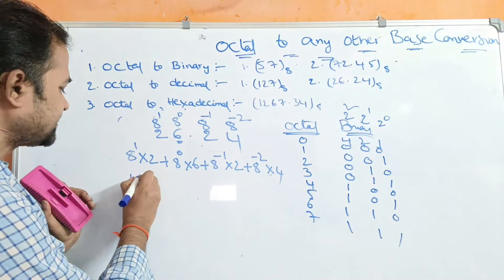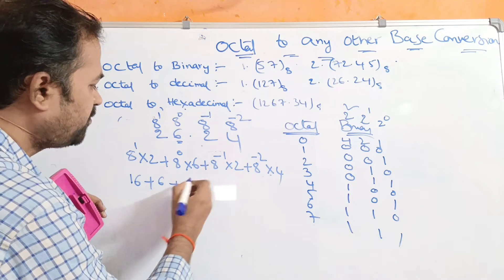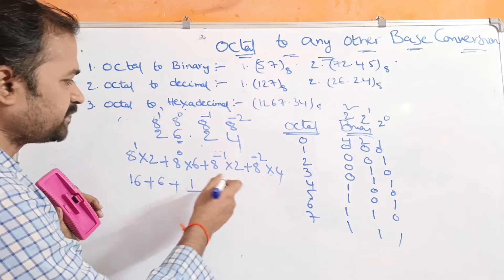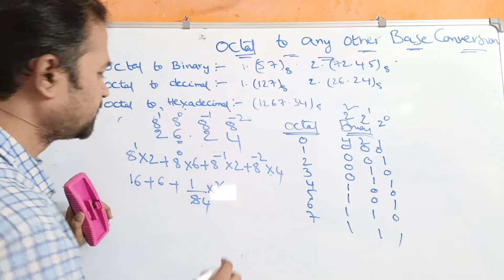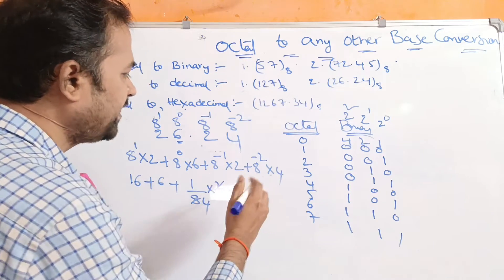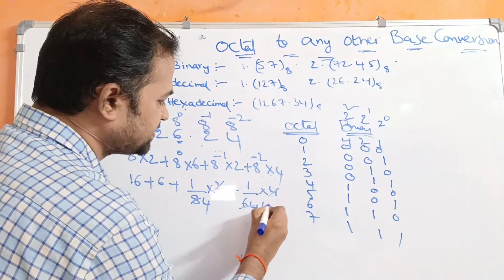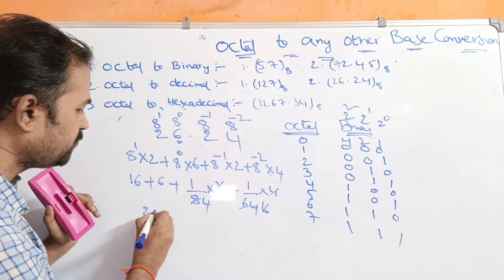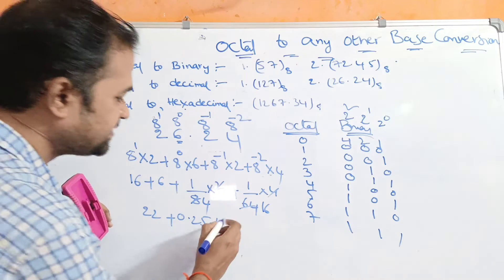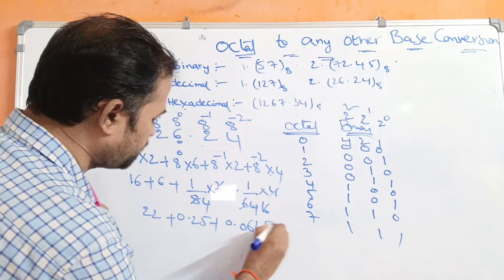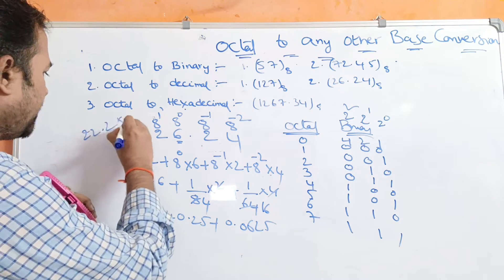Calculating: 8¹ × 2 = 16. 8⁰ × 6 = 6. 8⁻¹ = 1/8, so 1/8 × 2 = 2/8 = 0.25. 8⁻² = 1/64, so 1/64 × 4 = 4/64 = 1/16 = 0.0625. Adding: 16 + 6 = 22, then 22 + 0.25 = 22.25, plus 0.0625 gives 22.3125 base 10.